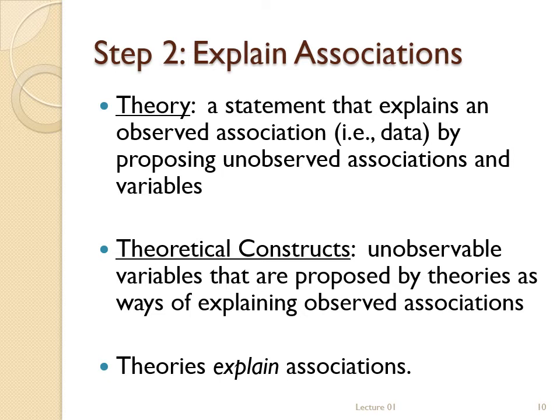The textbook definition of a theory states that it is a broad statement of scientific relationships or underlying principles, which is true. But what that definition doesn't make explicit is that the statement is an explanation of the associations among variables. A theory, in my definition, explains observable associations — that is, data — by proposing unobserved associations. We try to explain what we do see by suggesting that there's more going on that we don't see, at least directly. Our senses only give us access to a small portion of that objective reality.